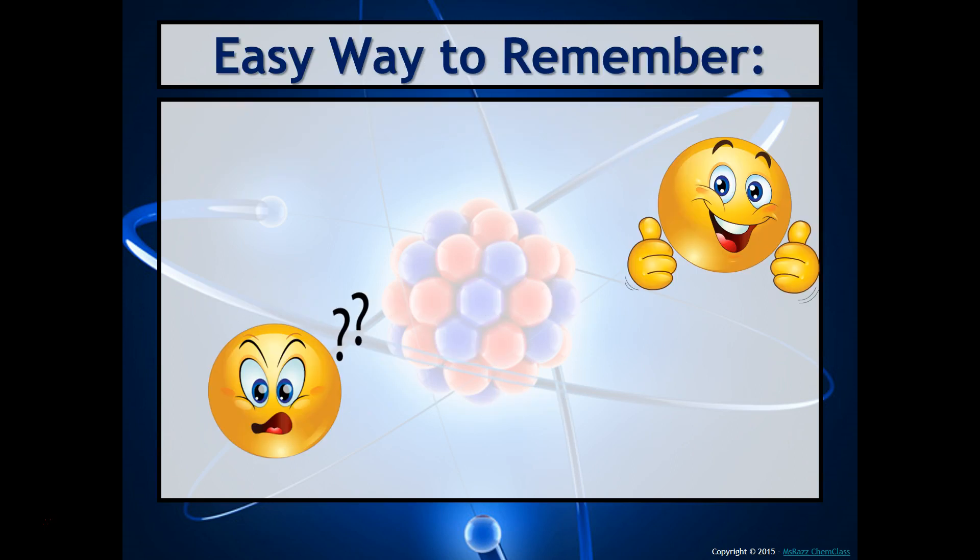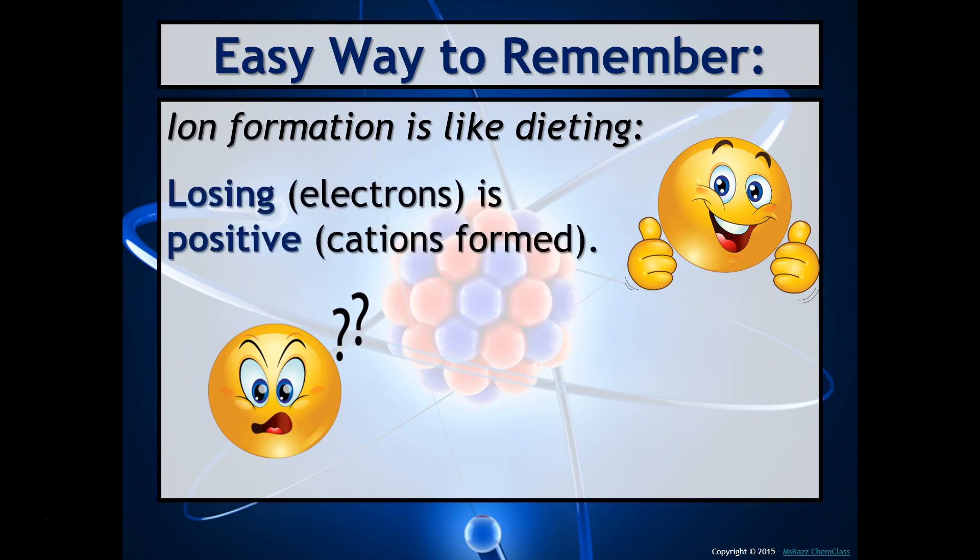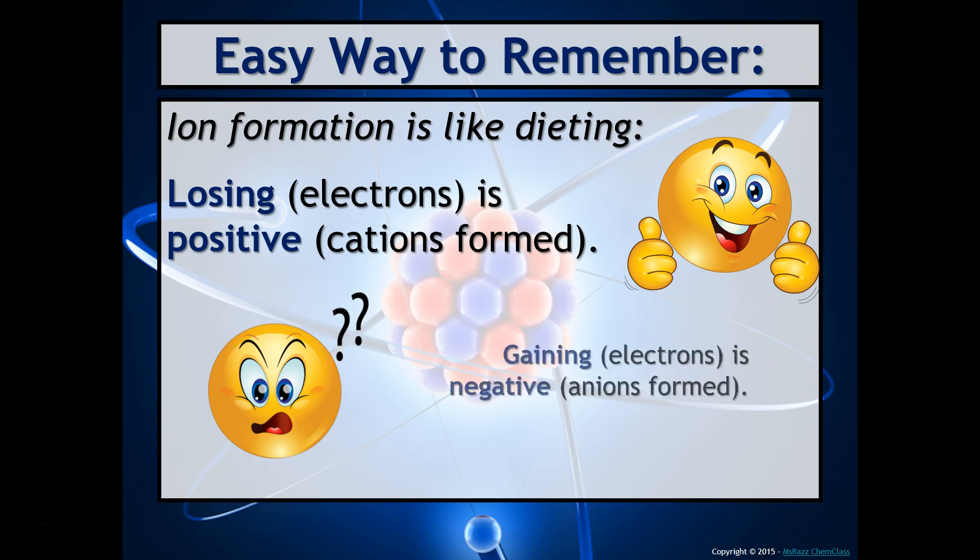There's a really easy way to remember the difference between cations and anions. Ion formation is very similar to dieting. For example, losing electrons is positive, right? That's your cation being formed. Just like losing weight is a good thing. Conversely, gaining electrons or gaining weight is negative. That's a bad thing. So, we say gaining electrons are negative. Anions are formed.